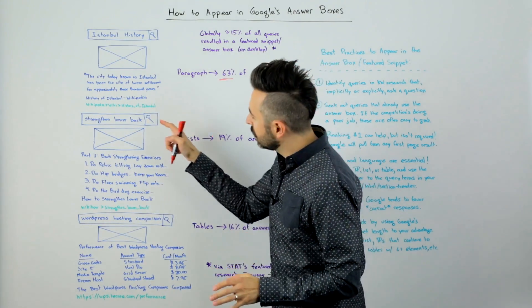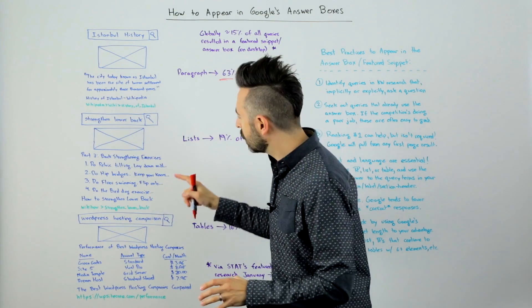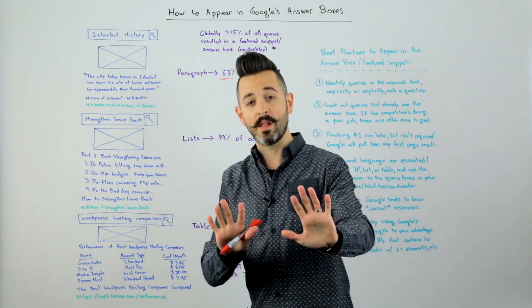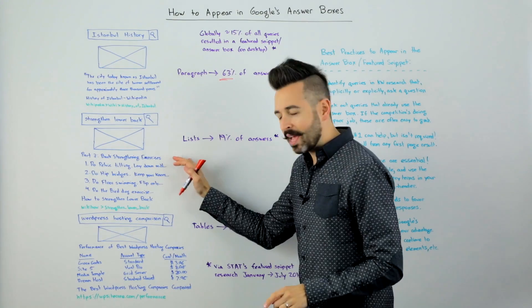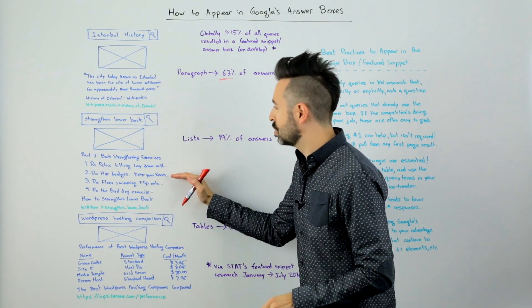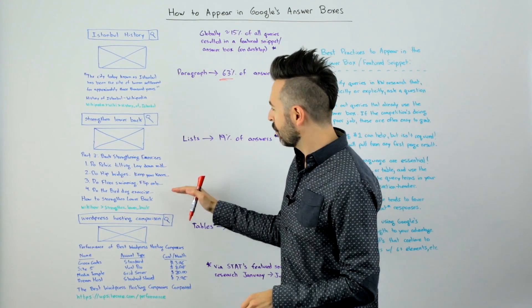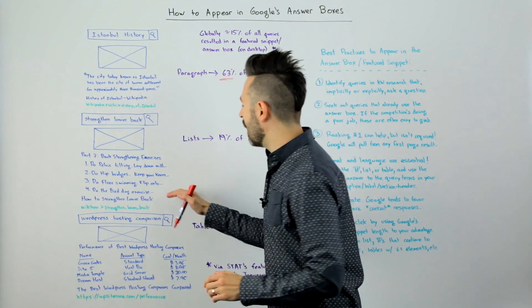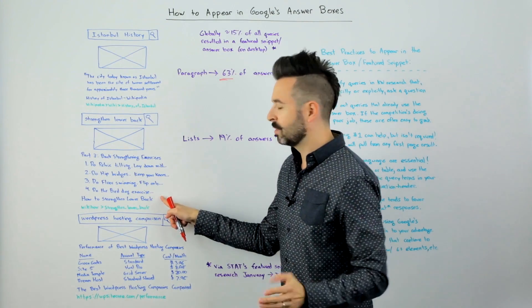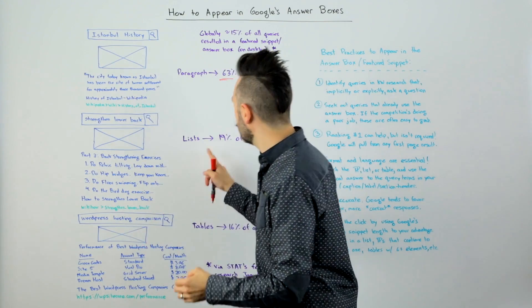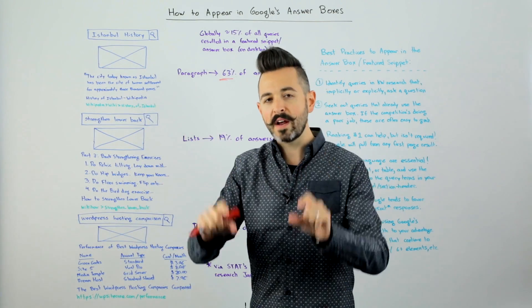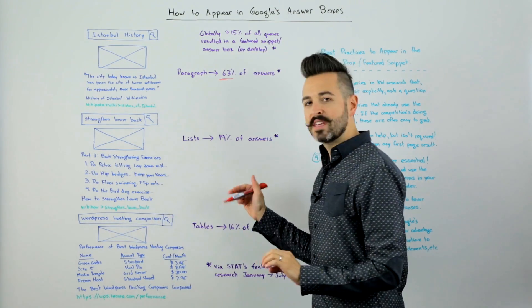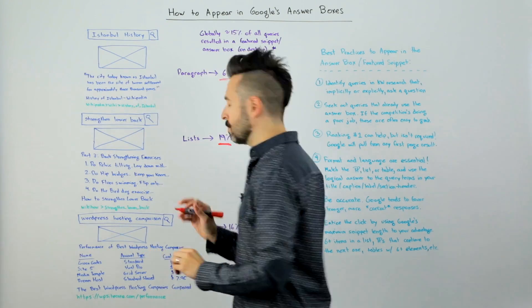Next we have lists. I searched for 'strength and lower back' and got an image, then a result from WikiHow — quality questionable — showing back strengthening exercises: number one, do pelvic tilting; number two, do hip bridges; number three, do floor swimming; number four, do the bird dog exercise. This is from an article called 'How to Strengthen Lower Back' on WikiHow. Lists, in numeric or bullet point format, are about 19% of answers.